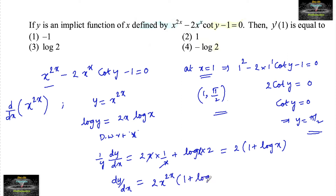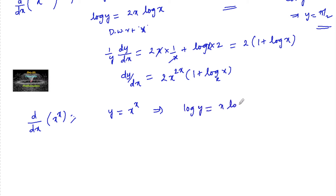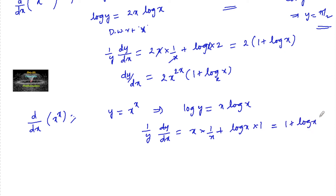For d/dx of x to the power of x: put y equal to x to the power of x, apply log on both sides giving log y equals x log x. Differentiating with respect to x: 1/y · dy/dx equals x into 1/x plus log x into 1, which gives 1 plus log x. So dy/dx equals x to the power of x times 1 plus log x.